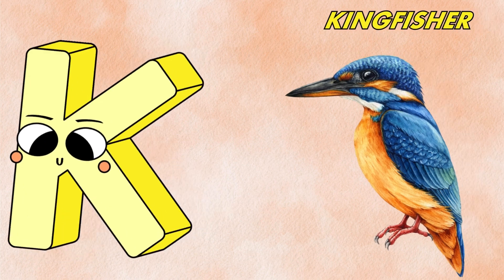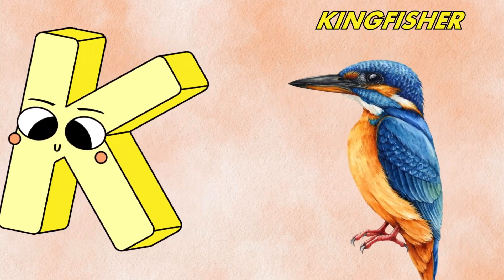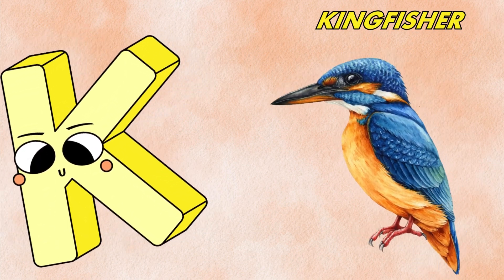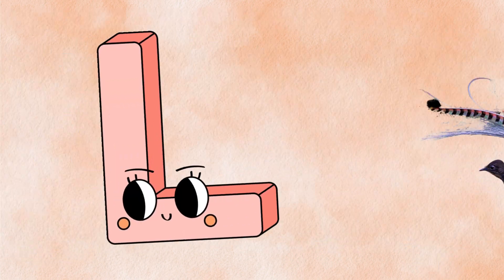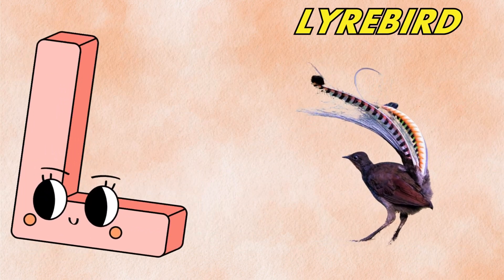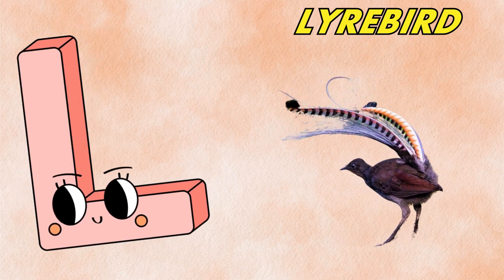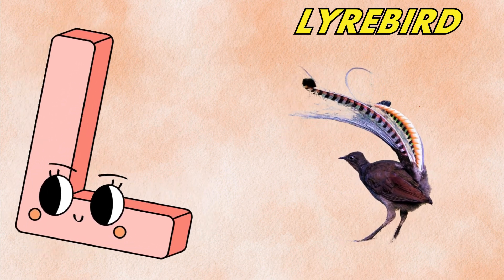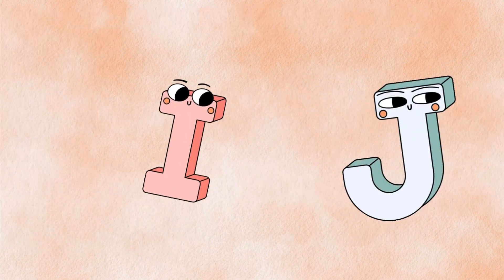K is for kingfisher, kuh, kingfisher. L is for lyrebird, luh, lyrebird.